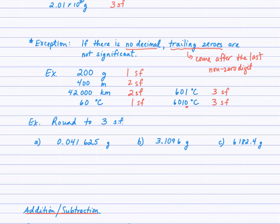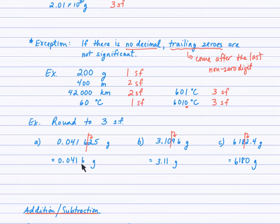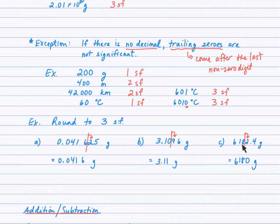Try rounding to three sig figs for each of these questions. Read the value from left to right, start counting at the first non-zero digit: one, two, three — look at the neighbor, it's low, keep the six the same. Over here, the 3 is the first non-zero digit: one, two, three — look at the 9, it's high, bump the zero to a one. Reading from left to right, the 6 is the first non-zero digit: one, two, three — look at the neighbor, it's low, keep the 8 the same. But I can't just stop at 618 because that's nowhere near 6182.4, so I need to put a trailing zero to hold the ones position so that 8, 1, and 6 end up in the tens, hundreds, and thousands places. We finish with 6180.